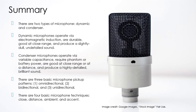Here's a summary. There are two types of microphone: dynamic and condenser. Dynamic microphones operate via electromagnetic induction, are durable, good at close range, and produce a slightly dull undetailed sound. Condenser microphones operate via variable capacitance, require phantom power or battery power, are good at close range or distance, and produce a highly detailed, brilliant sound. There are three basic microphone pickup patterns: omnidirectional, bidirectional, and unidirectional — the unidirectional pickup pattern is usually called cardioid. And there are four basic microphone techniques: close, distance, ambient, and accent.